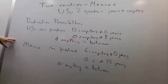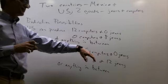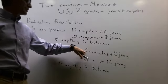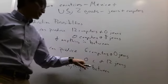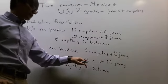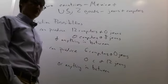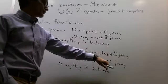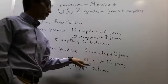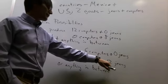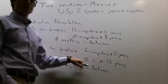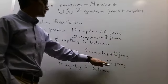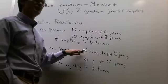For Mexico, the opportunity cost of producing a computer: if they start at 12 jeans and no computers and shift to only computers, they get six computers. So going from 12 to zero jeans gets six computers — meaning for every two pairs of jeans they give up, they get one computer. Because if you give up all 12 jeans you get six computers, so giving up just two jeans gets you one computer — that's the ratio.